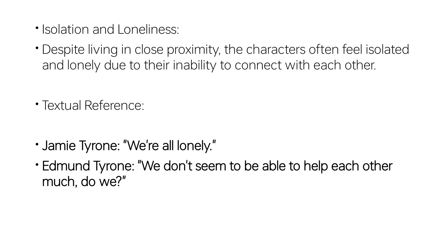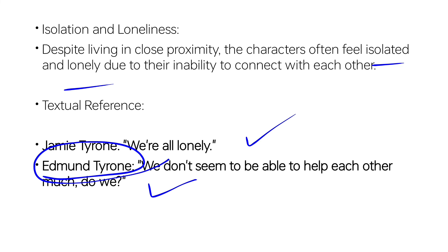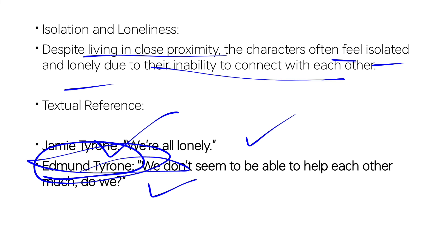On top of that, despite living in close proximity, the characters often feel isolated and lonely due to their inability to connect with each other. Write this theme with the marker. The quotation is: 'We are all lonely,' and Edmund Tyrone says, 'We would not seem to be able to help each other much, do we?' Edmund's character is basically autobiographical — Eugene O'Neill's autobiographical character is present in this play as Edmund.